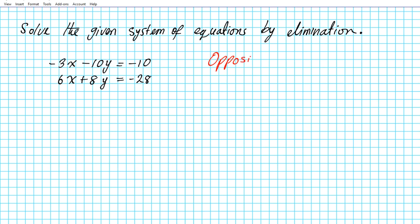Why are opposites so important? The bottom line is when you combine opposites — two terms that are opposites of each other — they basically eliminate each other. So we look at the x's and the y's and we want to create opposites. The question is: which one is the easiest to create opposites for — the x or the y?